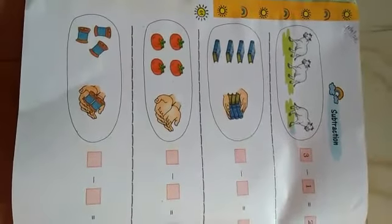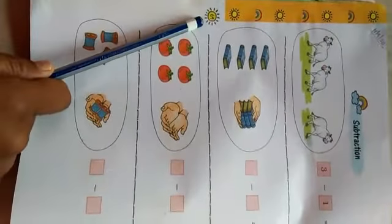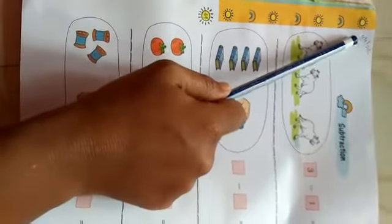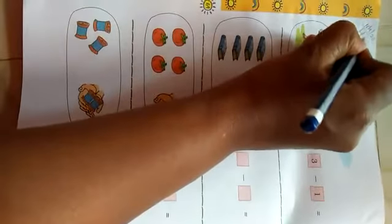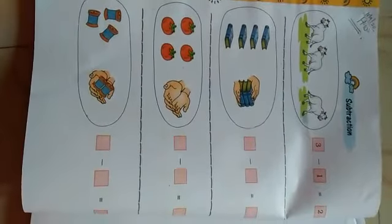Now, homework time. Open the page number 64. Write down today's date, 16-9-2020. And this page is your homework. Do this page and send it to me.